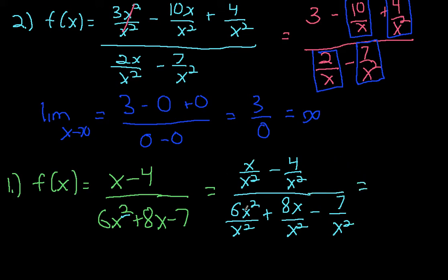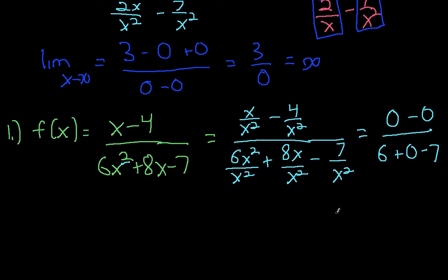Looking at the top, any term where the larger exponent of x is in the bottom is going to approach 0. So this is going to become 0 minus 0 over 6 plus 0 minus 0 as you evaluate that limit. We can see that this becomes 0 divided by 6, which is simply 0. So we would say in this case our horizontal asymptote is y equals 0.